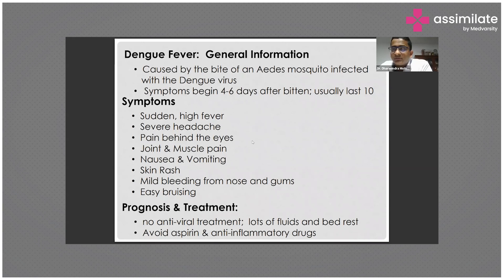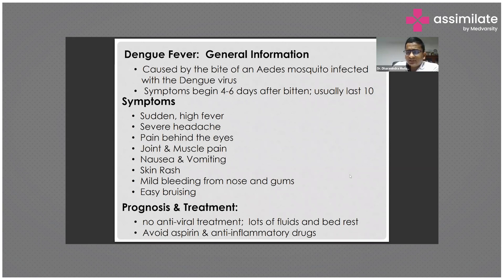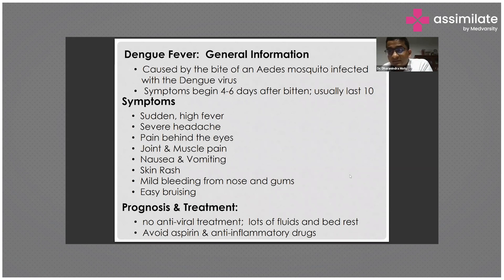There is something called expanded dengue syndrome, coined from observational studies in the Maharashtra area. In expanded dengue syndrome, dengue fever with shock involves multi-organ involvement: elevated creatinine, elevation in SGOT and SGPT. Multiple organs are affected, and this is an important concept for competitive exams and clinical practice.